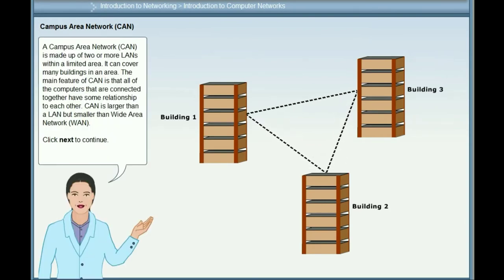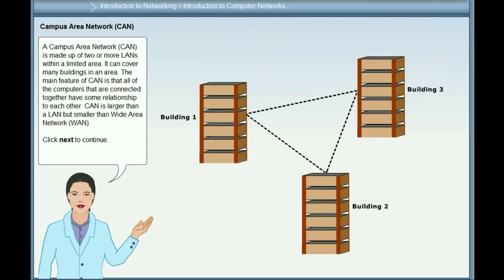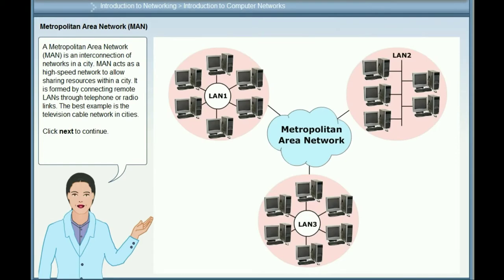A Campus Area Network (CAN) is made up of two or more LANs within a limited area. It can cover many buildings in an area. The main feature of CAN is that all of the computers connected together have some relationship to each other. CAN is larger than a LAN but smaller than a Wide Area Network (WAN). A Metropolitan Area Network (MAN) is an interconnection of networks in a city. MAN acts as a high-speed network to allow sharing resources within a city. It is formed by connecting remote LANs through telephone or radio links.